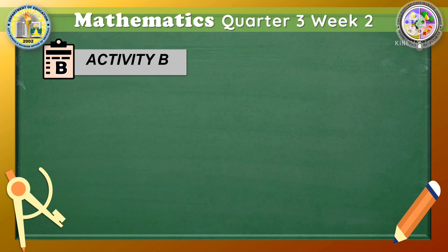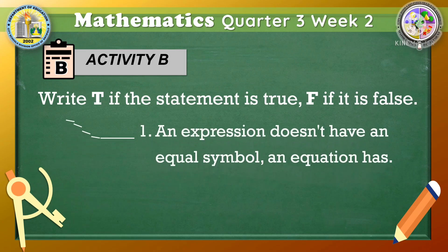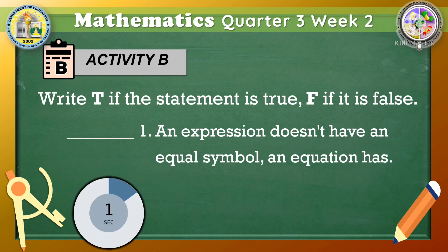Number 1. An expression doesn't have an equal symbol. An equation has. Is it true or false? Should you write T or F? The correct answer is T because the statement is correct. Did you get the correct answer? Great job!